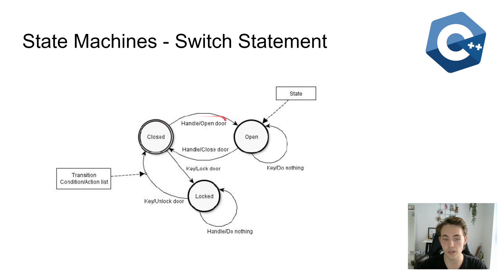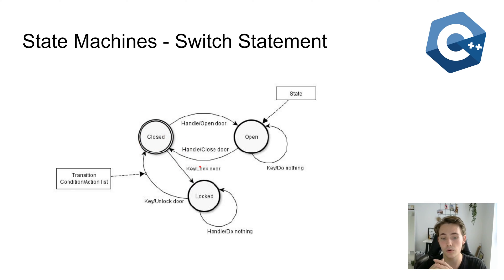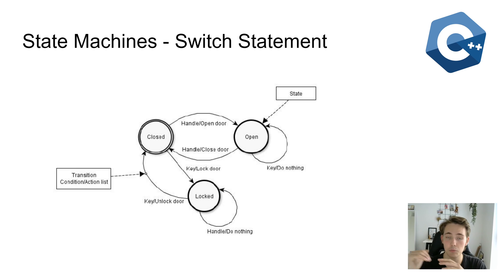The transition arrows show in which direction we are transitioning when some condition occurs. We also have the double rings which represent the idle state. If we use the handle on the door, we transition from the closed state to the open state. If we use the handle again, we transition from open back to closed. From the closed state, using the key locks the door and transitions to the locked state. In the locked state, using the handle does nothing — we need to use the key to unlock the door and transition back to the closed state.